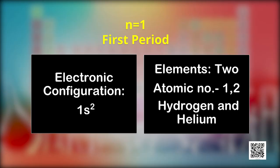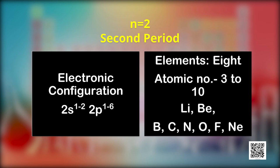The number of elements in a period depends on the maximum number of electrons that a shell can accommodate. The first period corresponds to filling electrons in the first shell (N=1), which has only one S orbital accommodating maximum two electrons — therefore it has only two elements: hydrogen (1s¹) and helium (1s²). The second period corresponds to the second energy shell (N=2), with four orbitals — one 2s and three 2p — accommodating maximum eight electrons. It starts with lithium (atomic number 3, configuration 1s²2s¹) and ends at neon (atomic number 10, configuration 1s²2s²2p⁶).